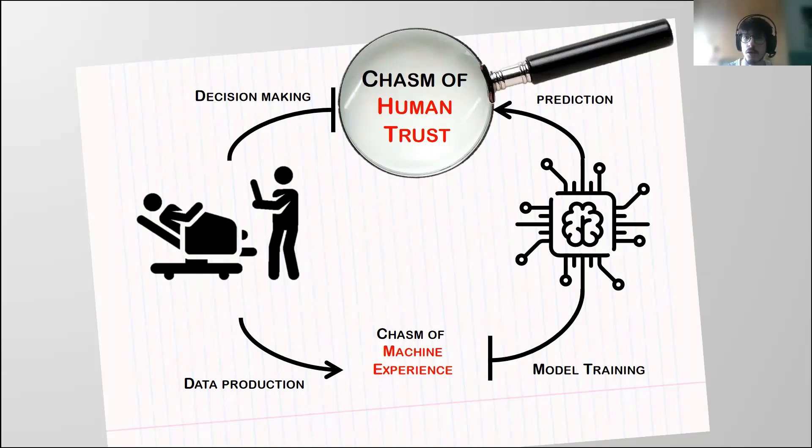On the other hand, the chasm of human trust regards all processes that are related to the building of trust that the user can have on the artificial intelligence systems. This regards, for example, the validation and evaluation of the artificial intelligence systems.